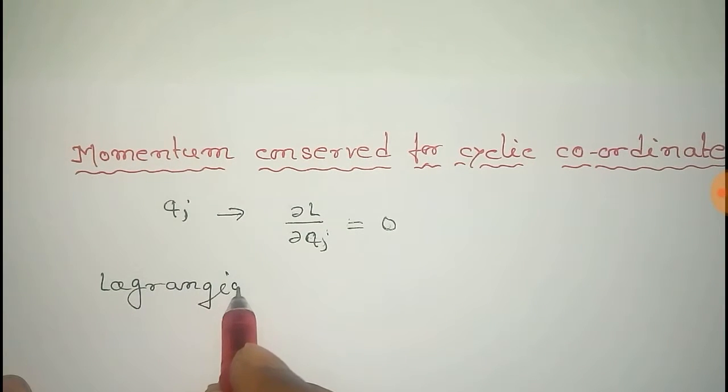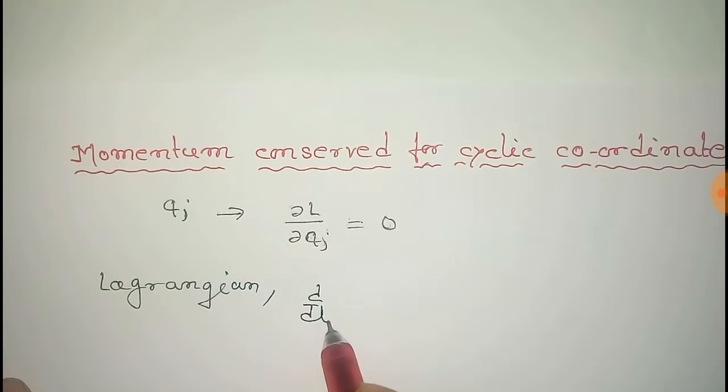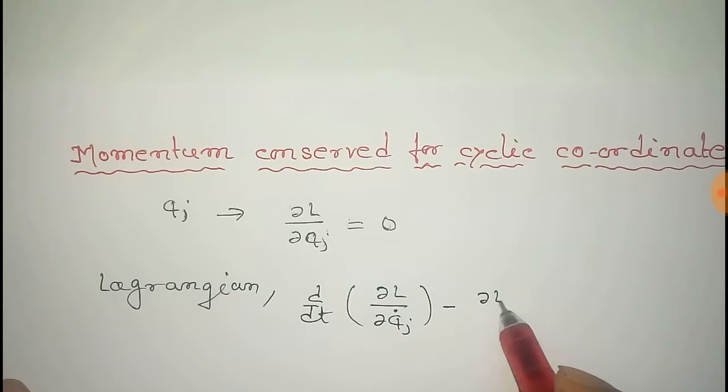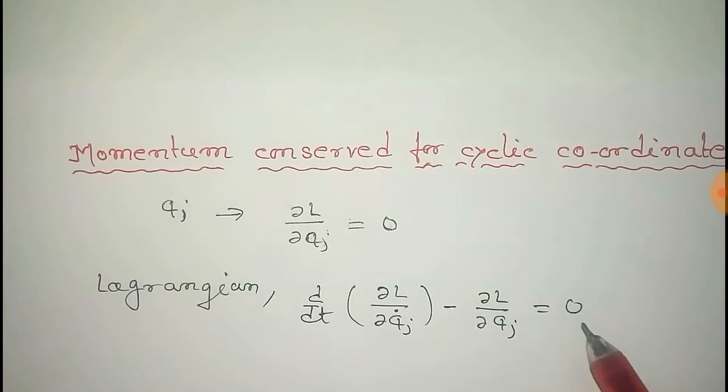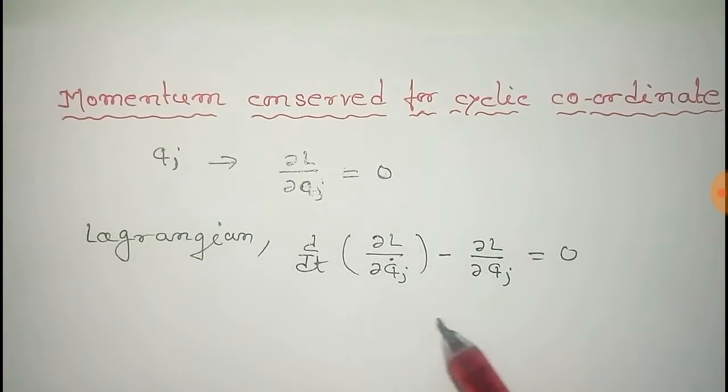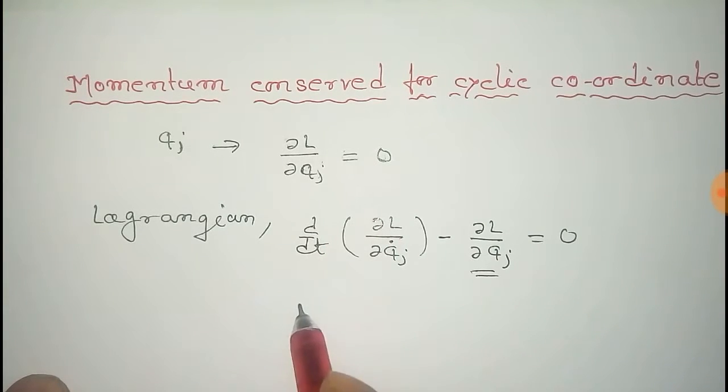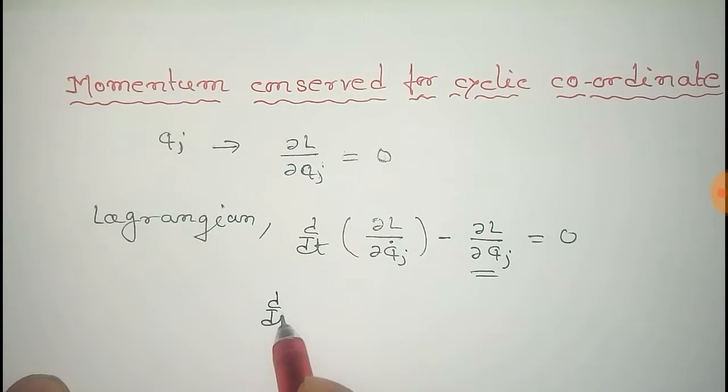We get that d dt of del L del qj dot minus del L del qj equals zero. And since this del L del qj equals zero, this term equals zero, so we get d dt of del L del qj dot equals zero.